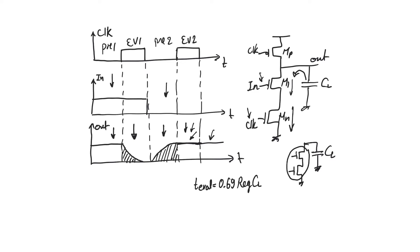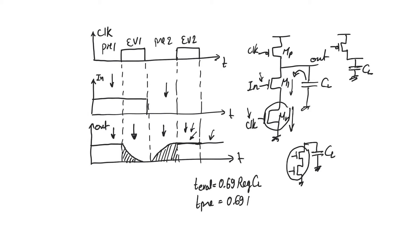The transistors forming the path to ground will always include the tail transistor, so we must account for it when sizing our gates. The pre-charge delay occurs when the pre-charge transistor MP charges capacitor CL, and is simply 0.69 × R_P × CL.